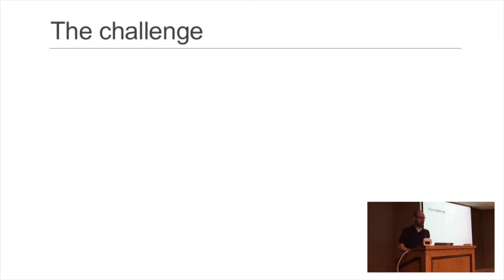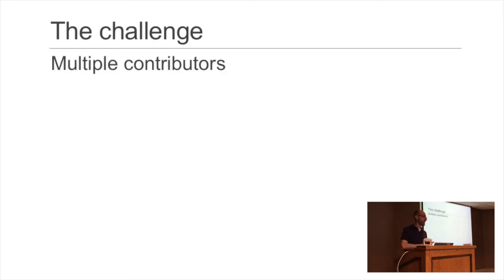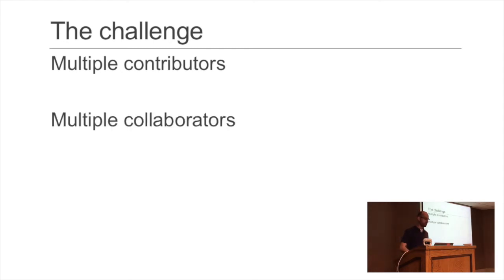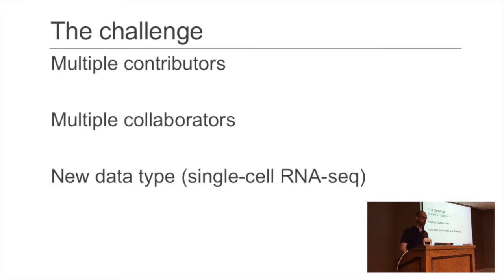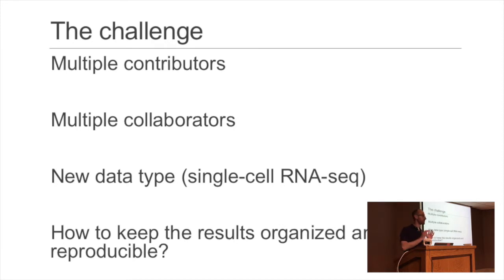Around the middle of my PhD I started a new project. My earlier ones were all solo projects, but for this one I was going to have multiple contributors, so I had to document the process better and onboard people with varying levels of programming experience. We also had collaborators who would want to see the results, and I wanted a better way to share them than emailing or syncing via Dropbox. It was a newer type of data — single-cell RNA sequencing back in 2015 — and with multiple people constantly changing code, I needed a way to keep it all organized and reproducible.